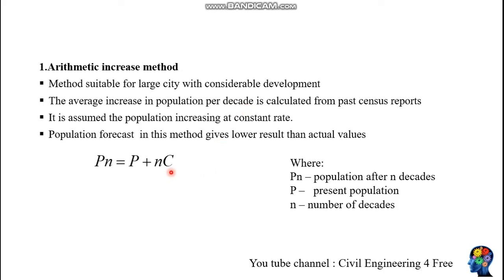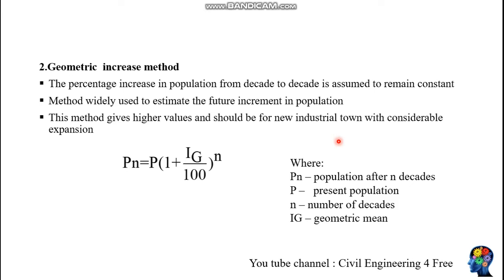The formula is: Pn is the future population, equal to the present population P plus n times C, where n represents the number of decades and C is the average increase. When you forecast using this method, it gives relatively lower results or values than actual findings.